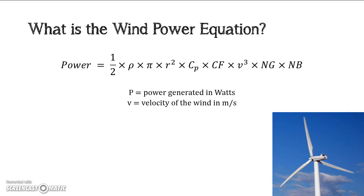V is velocity of the wind in meters per second, and then the equation requires that you cube that. Rho, which is a Greek symbol right here, stands for the density of the wind in kilograms per cubic meters. So it's an amount of air in a specific three-dimensional space.